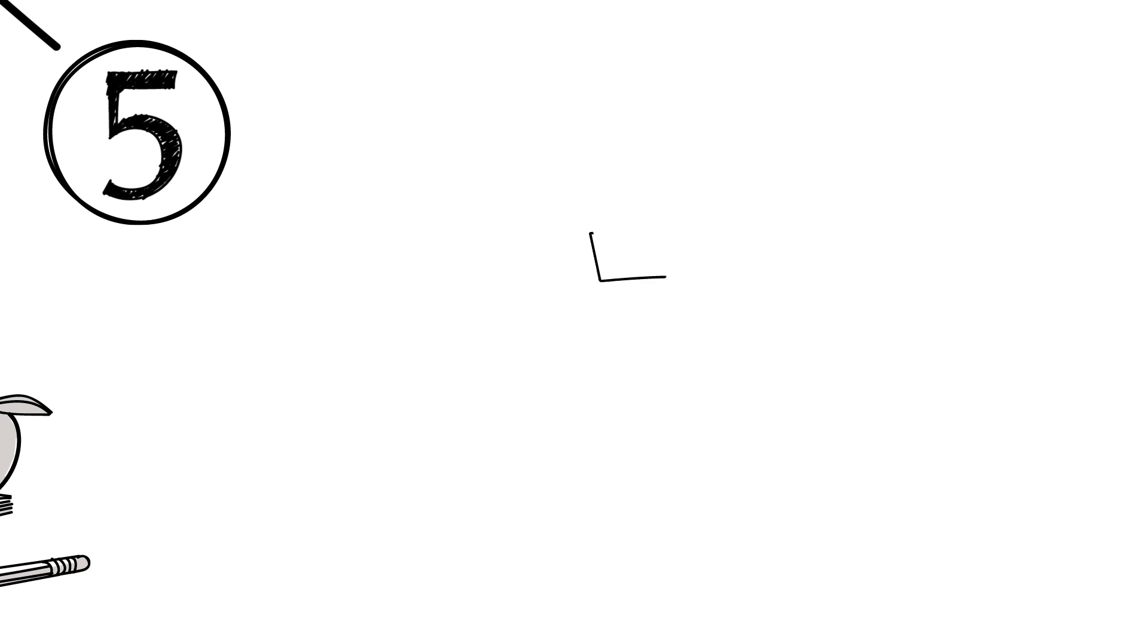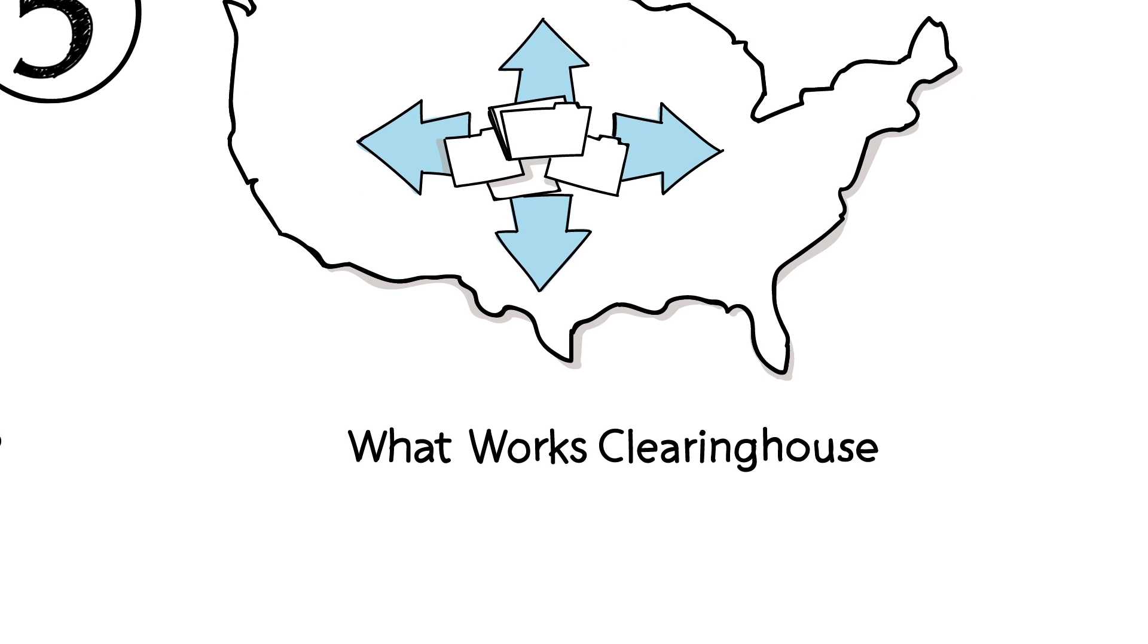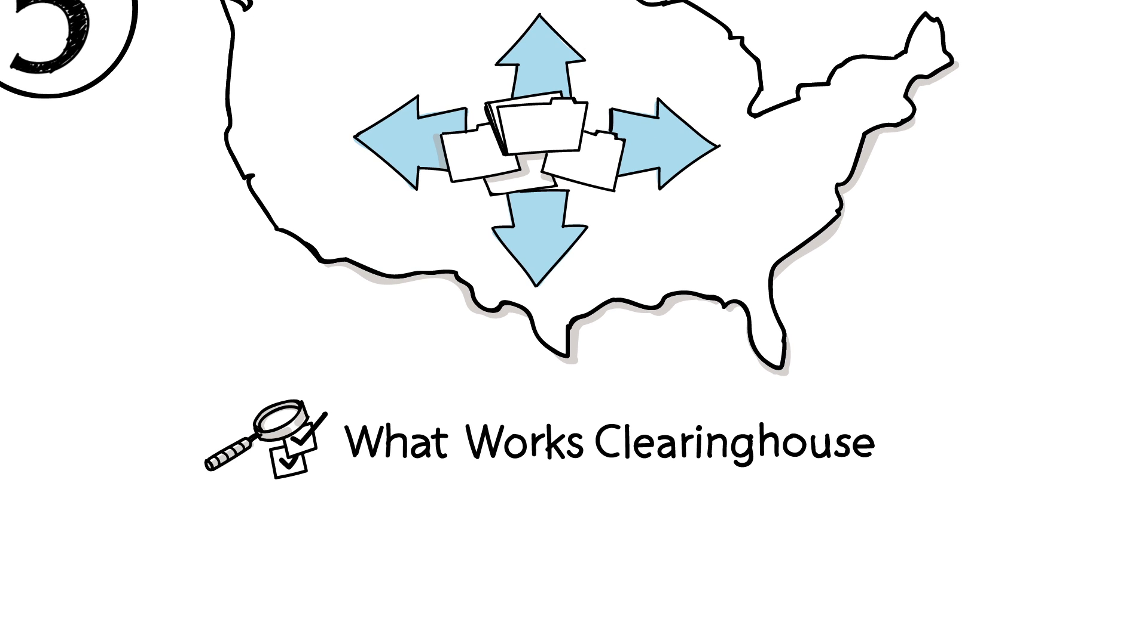Five, an important part of IES's work is to bolster the use of data and research in education decision-making. The What Works Clearinghouse conducts impartial, rigorous reviews of research to help decision-makers make sense of the evidence. The Regional Educational Laboratories work with states and districts to help them learn what works.